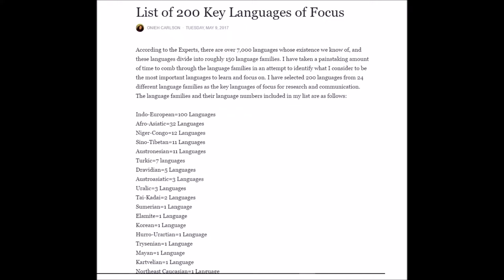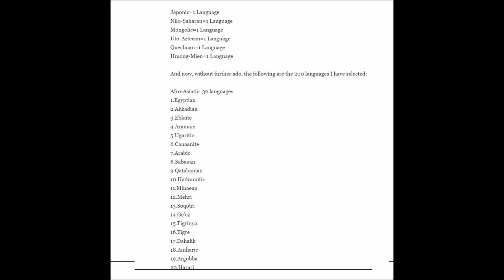The language families and their language numbers included in my list are as follows: Indo-European — 100 languages; Afro-Asiatic — 32; Niger-Congo — 12; Sino-Tibetan — 11; Austronesian — 11; Turkic — 7; Dravidian — 5; Austroasiatic — 3; Uralic — 3; Tai-Kadai — 2; and one each for Sumerian, Elamite, Korean, Hurro-Urartian, Tyrsenian, Mayan, Kartvelian, Northeast Caucasian, Japonic, Nilo-Saharan, Mongolic, Uto-Aztecan, Quechuan, and Hmong-Mien.